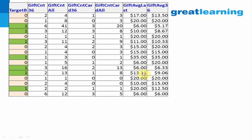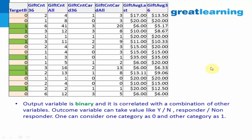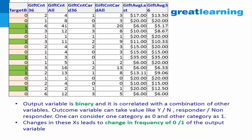Logistic regression is also known as credit scoring. It is regression, but the difference is that the dependent variable takes values 0 and 1, or Y and N, or responder and non-responder. In all these cases the outcome variable is binary and it is correlated with a combination of input variables. You can consider one category — for example, responder as 1 and non-responder as 0. The outcome variable is not numeric; it's a categorical variable: 0 or 1.